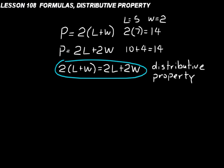Look at what happened there — do you see the pattern? 2 times L, so there was multiplication there, plus 2 times W — another multiplication. That's how you get 2L plus 2W. That's why the two formulas are the same. You're distributing the 2 over both the L and the W.